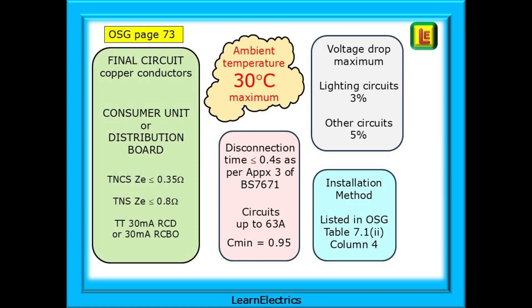and TT systems with 30mA RCDs or RCBOs. The ambient air temperature is assumed to not exceed 30 degrees Celsius - the cooler the better. Disconnection times should not be more than 0.4 seconds for circuits up to 63 amps with a C-min of 0.95. Voltage drop has a maximum of 3% of nominal voltage for lighting circuits and a maximum of 5% for all other circuits. Finally, the installation methods should be as listed in Table 7.1.2 in the On-Site Guide.